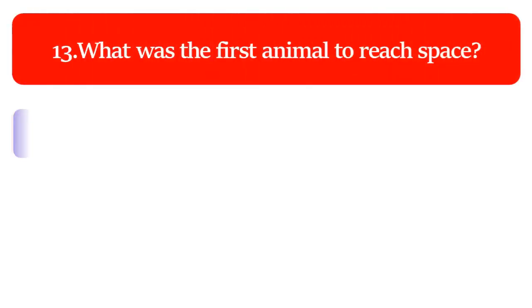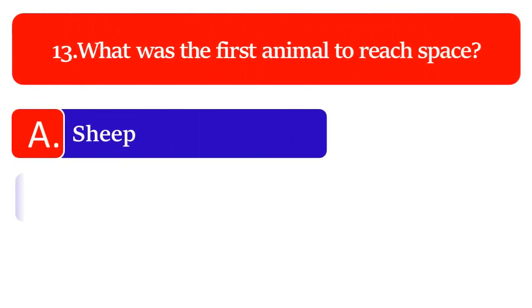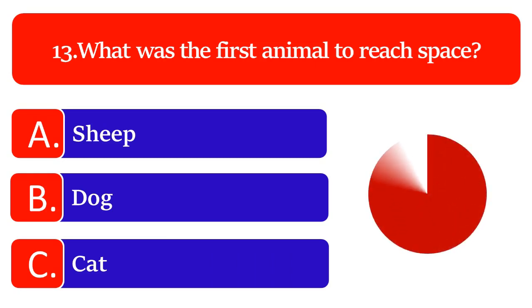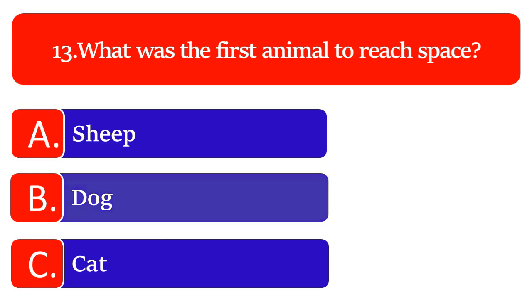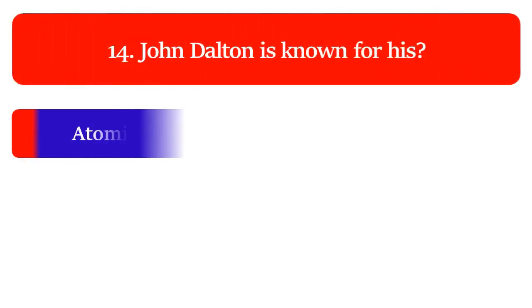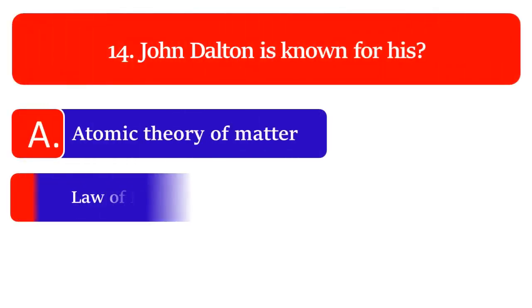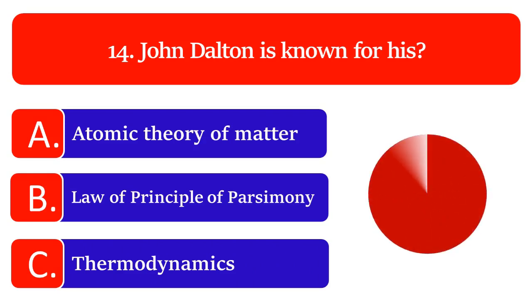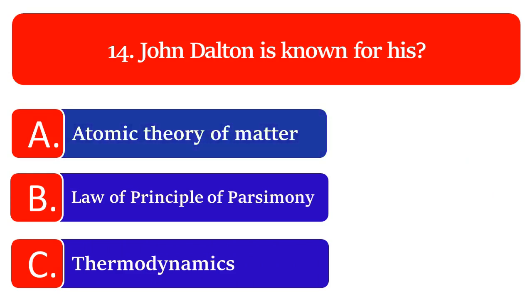What was the first animal to reach space: sheep, dog or cat? The great answer is dog. John Dalton is known for his atomic theory of matter, law of principle or parsimony or thermodynamics. The great answer is atomic theory of matter.